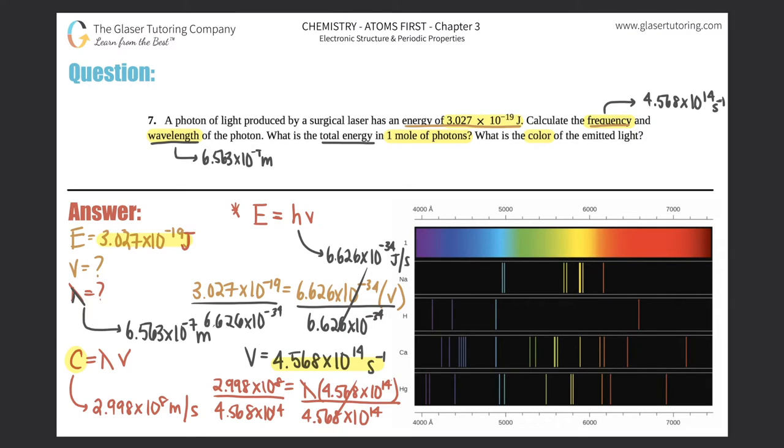Now they want the total energy of one mole of photon. It has to come from the energy they gave you, 3.027 times 10 to the negative 19th. Just know that whenever they give you an energy, it's always per one photon. So they're asking what is this answer in joules per one mole. I just need to find a conversion factor that goes from photons to moles. One mole equals 6.022, Avogadro's number, times 10 to the 23rd photons.